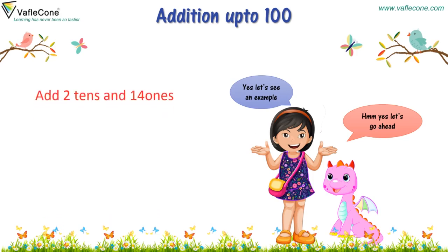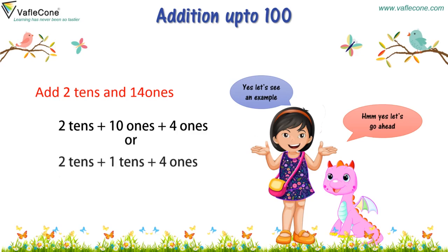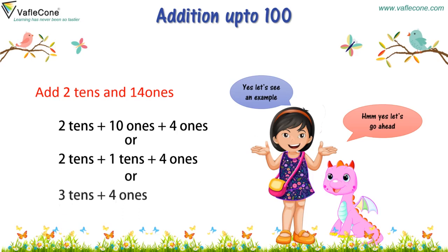Add 2 tens and 14 ones. That is 2 tens plus 10 ones plus 4 ones, or 2 tens plus 1 ten plus 4 ones, or 3 tens plus 4 ones. That is 34.